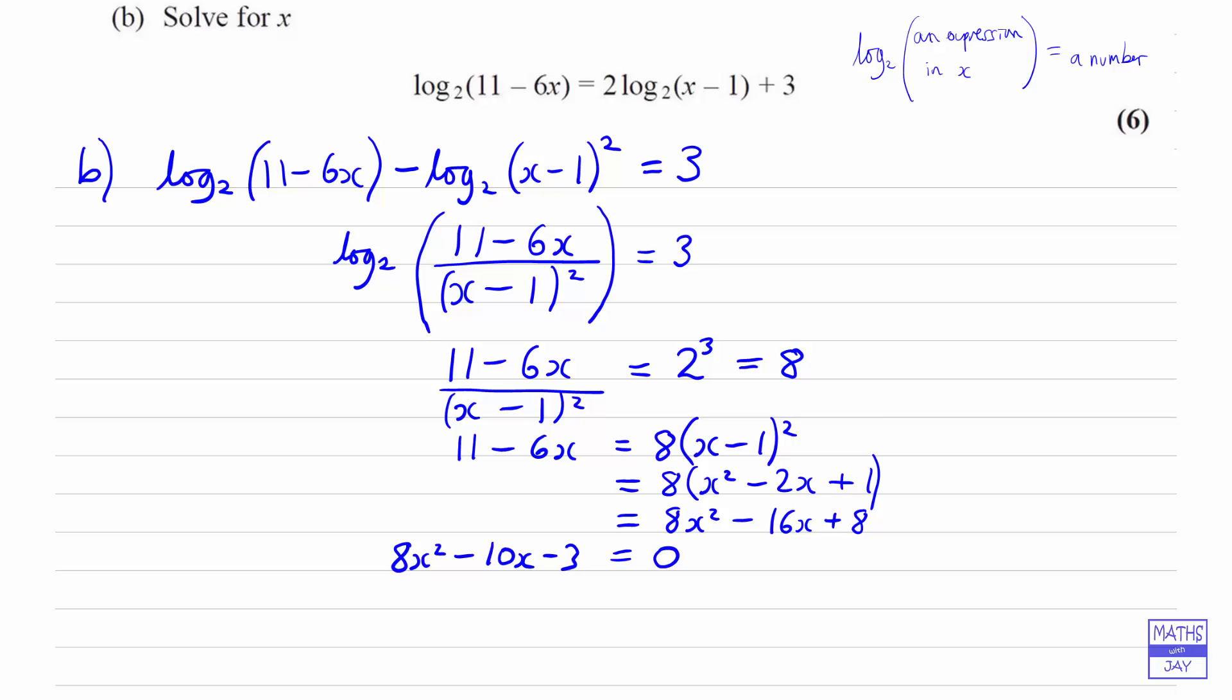So now all we need to do is to factorise that. So we know that 3 will factorise as 1 and 3. 8 will either factorise as 8 and 1 or 2 and 4. And in fact we get that 4x times 2x will give us what we want. And 1 times 2x and 3 times 4x. We want minus 10x so we need a minus 3 and a plus 1. So either one of those brackets has got to be 0. So x has got to either be equal to minus 1 quarter or 3 over 2.